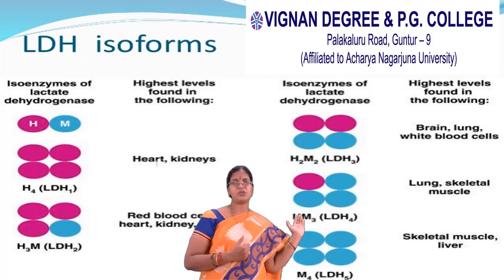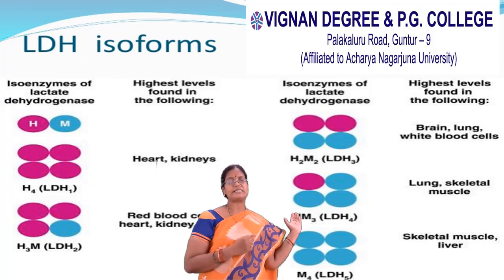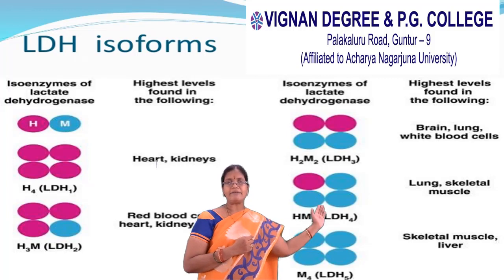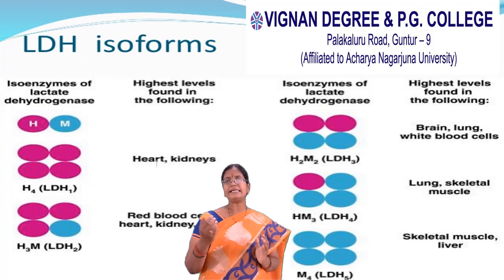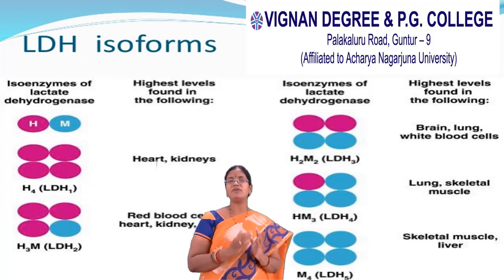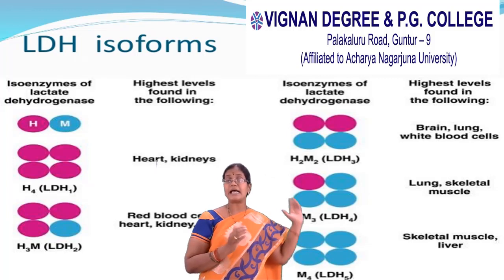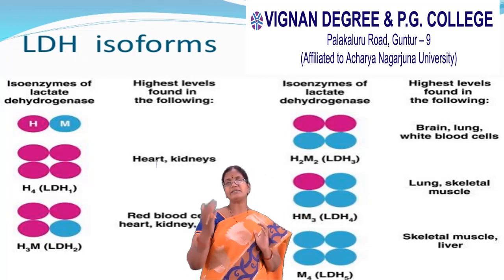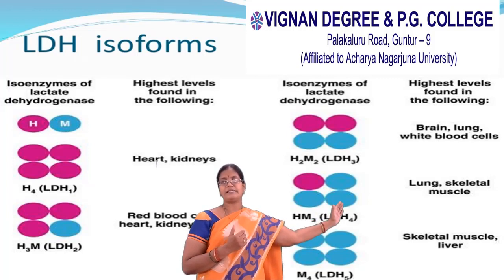LDH2 contains 3 heart subunits and 1 muscle subunit, and it is found in red blood cells, heart, kidney, and brain. Coming to LDH3, which has equal proportions of heart subunits and muscle subunits, represented as H2M2. It is mainly present in brain, platelets, and white blood cells.